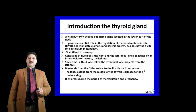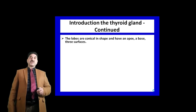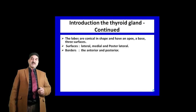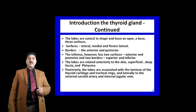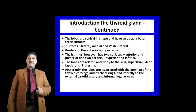Enlargement of the thyroid gland is seen during menstrual cycles and pregnancy. Each lobe is conical in shape and has a base and apex, with two borders — anterior and posterior — separating three surfaces: medial, lateral, and posterior-lateral. The isthmus has two borders, superior and inferior, separating anterior and posterior surfaces. The lobes are related anteriorly to the superficial fascia, deep cervical fascia, and infrahyoid muscles, and posteriorly to the laminae of the thyroid cartilage and tracheal rings.